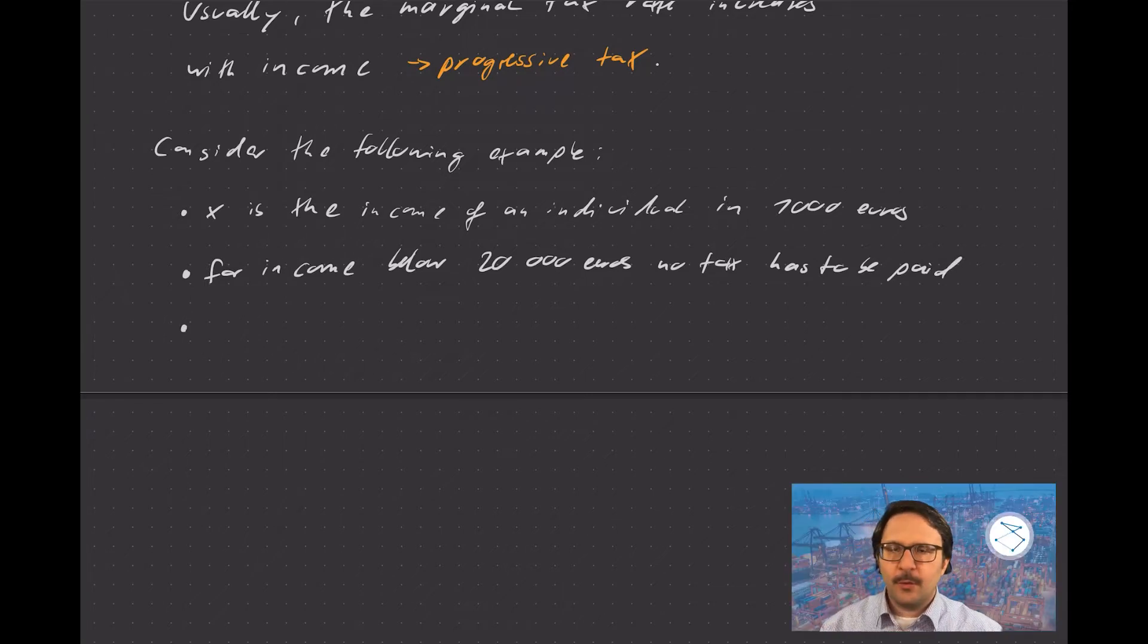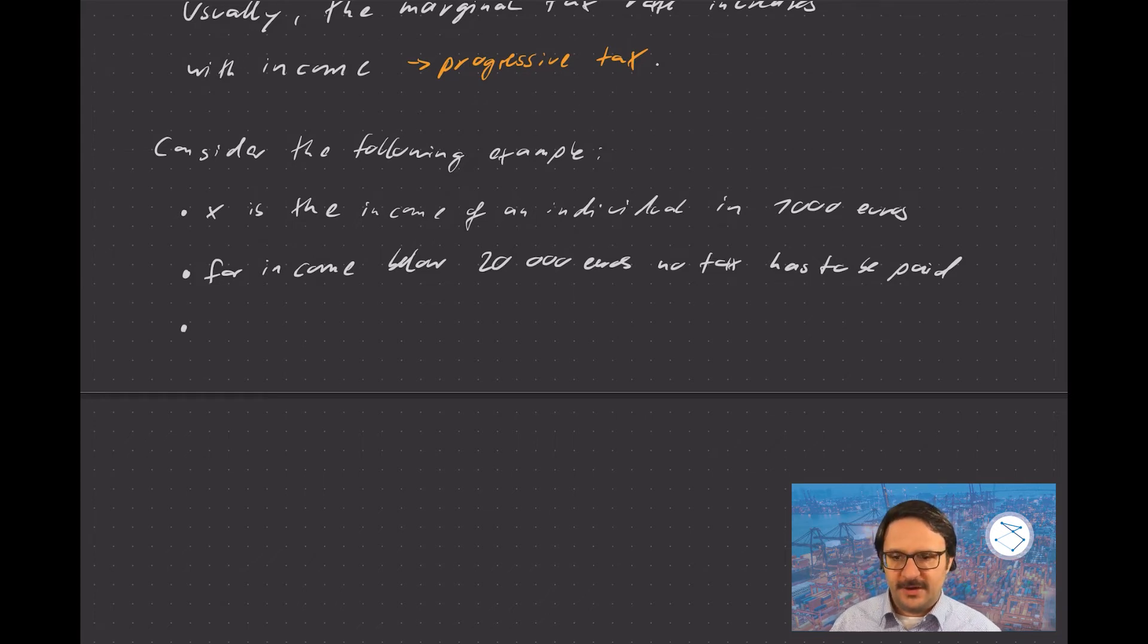The marginal tax rate is the tax that you pay for each additional unit of income. Usually, this marginal tax rate changes with income, and that is called a progressive tax. Now, let's take an example to illustrate that point. Consider the following example. Let's say x is the income of an individual measured in thousands of euros.